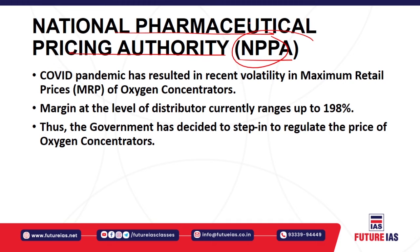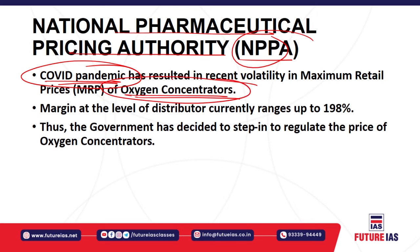The next topic is the National Pharmaceutical Pricing Authority (NPPA), a government regulatory agency that controls prices of pharmaceutical drugs in India. Due to the COVID-19 pandemic, many retailers are getting huge margins — specifically on oxygen concentrators, which are vital for safeguarding human lives. At the distributor level, the margin is 198%, which is a huge margin, and this has led to rising prices of oxygen concentrators in the market, causing significant volatility in maximum retail prices.